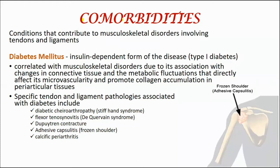Next we have comorbidities — conditions that contribute to musculoskeletal disorders involving the tendons and ligaments. There are three conditions. First is diabetes mellitus, an insulin-dependent form of disease and a type one disease. It is correlated with musculoskeletal disorders due to its association with connective tissue. Changes in connective tissue occur because of the disease, and metabolic fluctuations directly affect the microvascularity and collagen accumulation in the periarticular tissue.